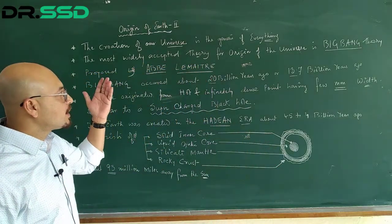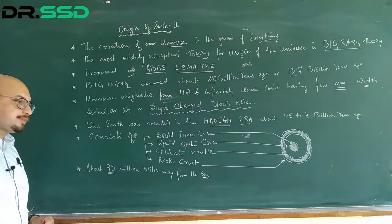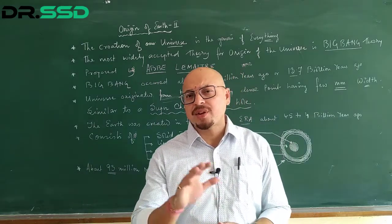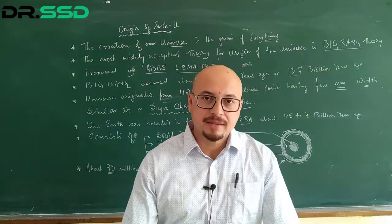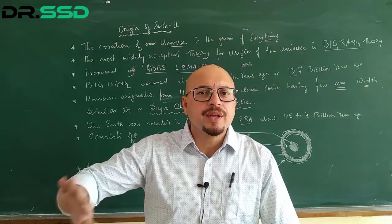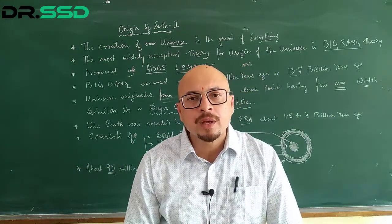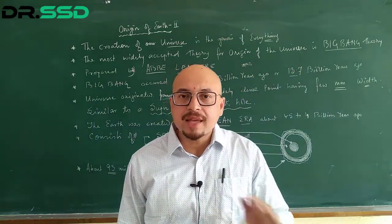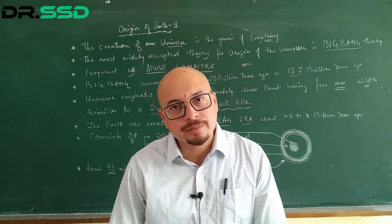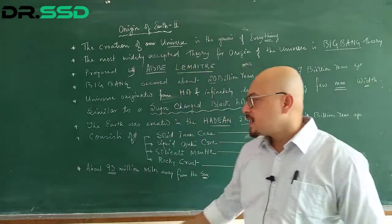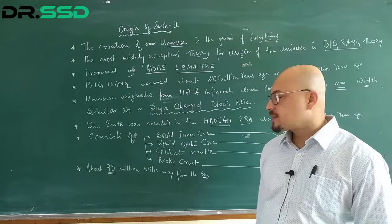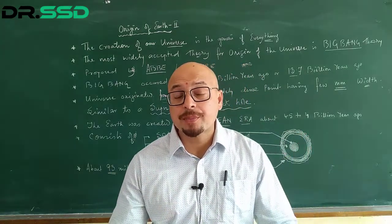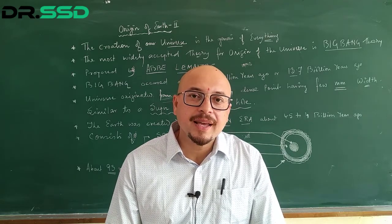The location of the earth in the solar system is extremely important. Our earth is the third planet — Mercury, Venus, Earth, Mars, Jupiter, Saturn, Uranus, Neptune. The location of earth is so strategic: it is neither close enough to the sun to be extremely hot, nor too far away to be extremely cold. The distance from the sun to the earth is 93 million miles. This distance is optimum, the temperature becomes optimum, and therefore life becomes possible.